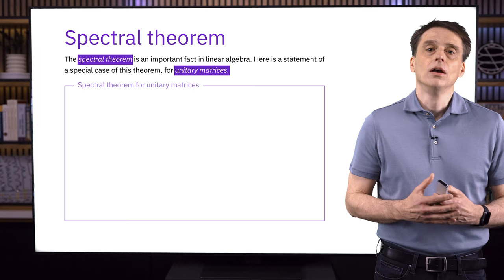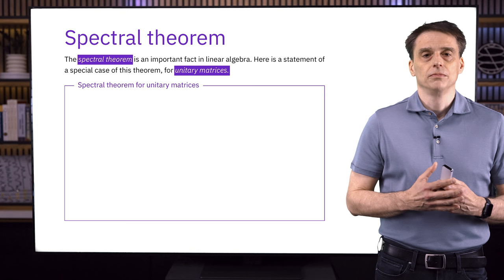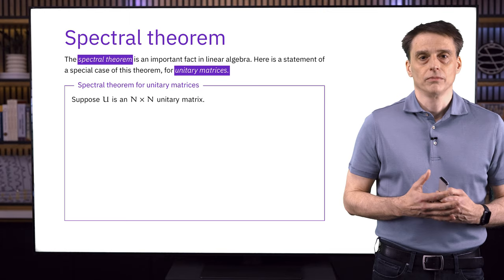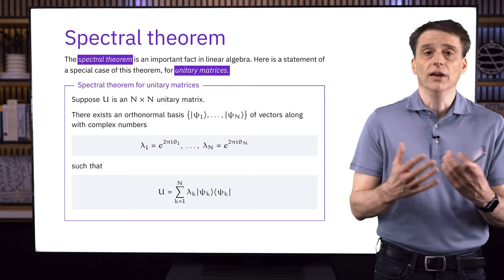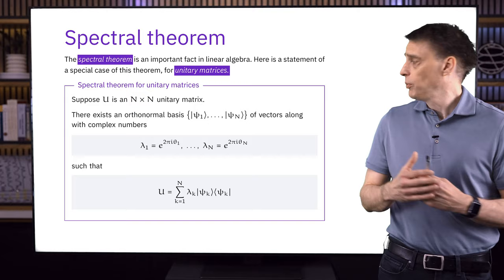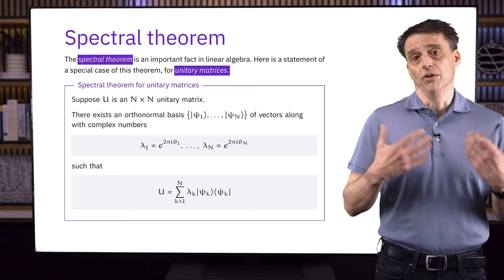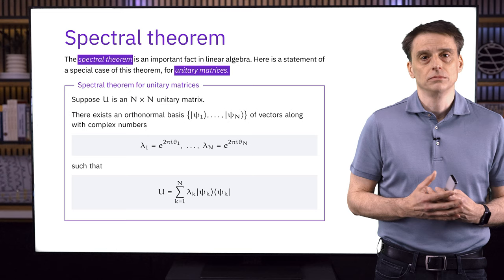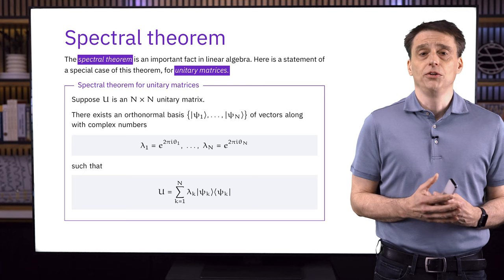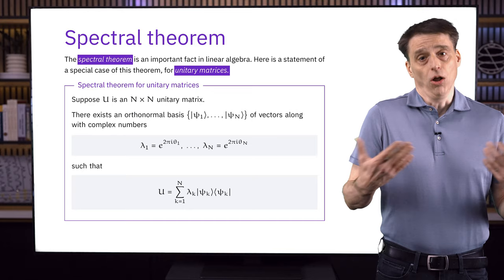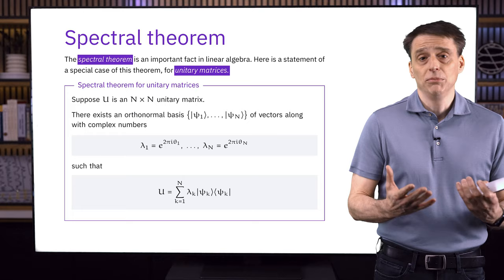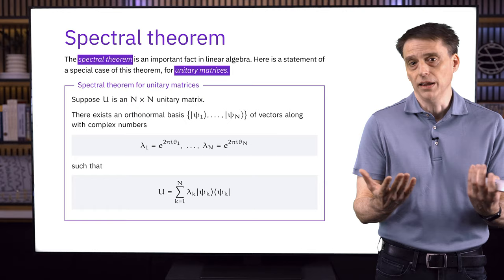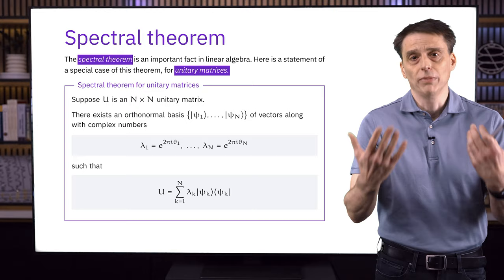Here's a statement of the spectral theorem just for unitary matrices. Suppose u is an n by n unitary matrix. The theorem says there must exist an orthonormal basis of vectors psi_1 through psi_n, along with n complex numbers lambda_1 through lambda_n, all lying on the complex unit circle, such that u can be expressed in that spectral decomposition. Each lambda is written as e to the power 2πi times theta, where each theta is a real number.